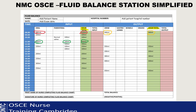Now pay particular attention to this next step - the hourly total column. On the intake side you have an hourly total, and on the output side you have an hourly total. What does that mean? The hourly total means the total for just that hour. So at 8 o'clock your patient had 150ml oral - that's 150ml. At 9 o'clock they had 100ml oral - the hourly total is 100ml. At 10 o'clock there was no oral but 100ml of IV fluid, so the hourly total is 100ml.